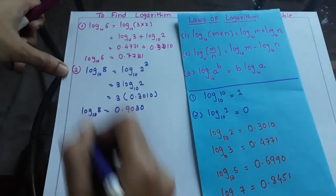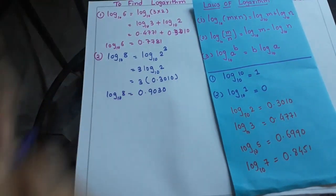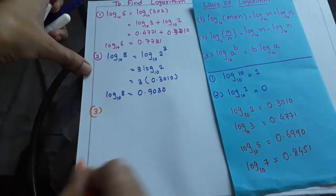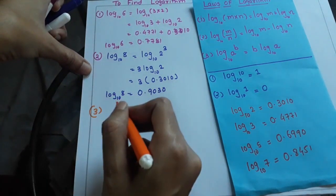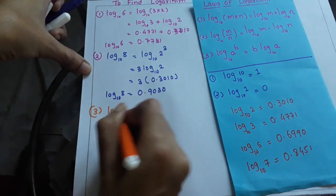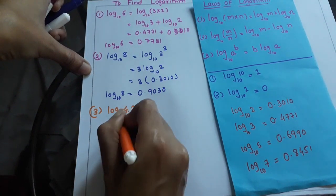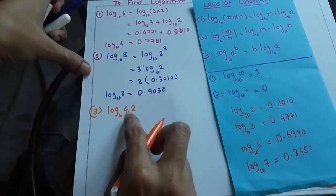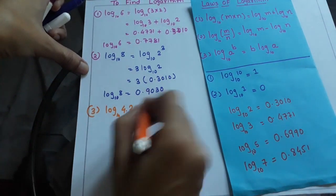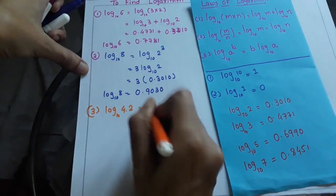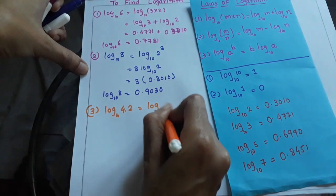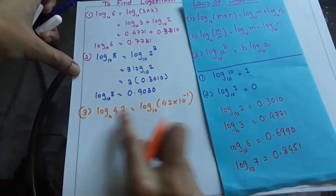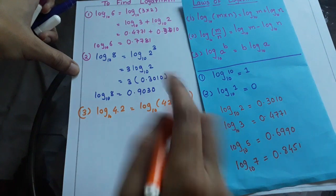Now let's find the log of a decimal number: log of 4.2. To handle the decimal point, we first remove it by writing 4.2 as 42 × 10⁻¹. So we need to find log(42 × 10⁻¹).